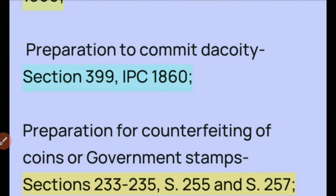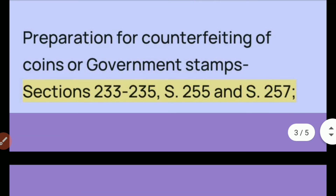Preparation for dacoity is punishable under Section 399 of IPC. Counterfeiting coins — preparation for counterfeiting government coins is also punishable under Sections 233 to 235, Section 255, and Section 257 of IPC.